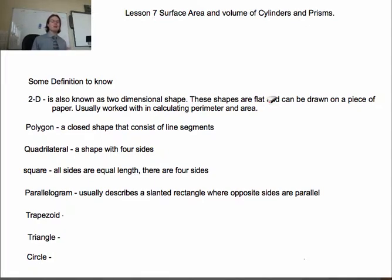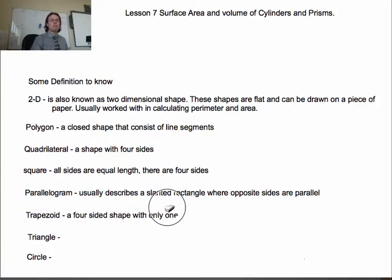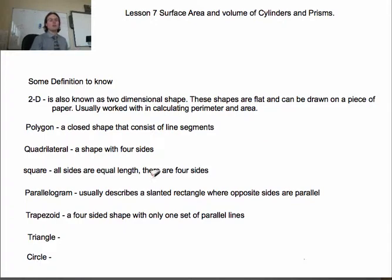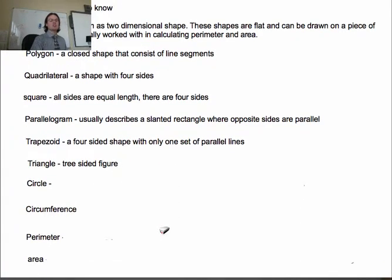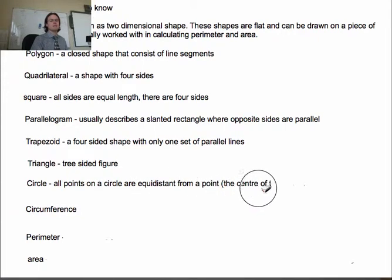A rectangle is also a parallelogram, and same with a square. Next one is a trapezoid or trapezium — a four-sided shape with only one set of parallel lines. Our next one is a triangle, which is a three-sided figure. And we have a circle — a round shape where all points are equidistant from the center.